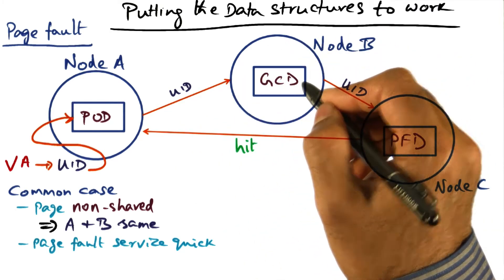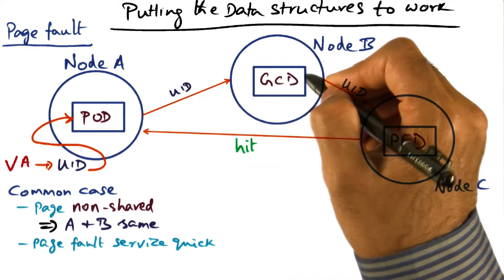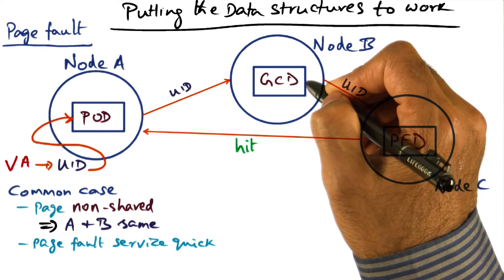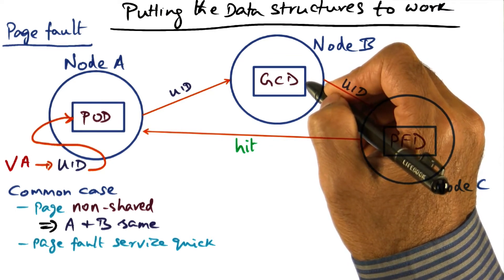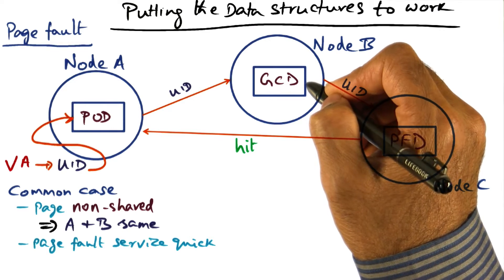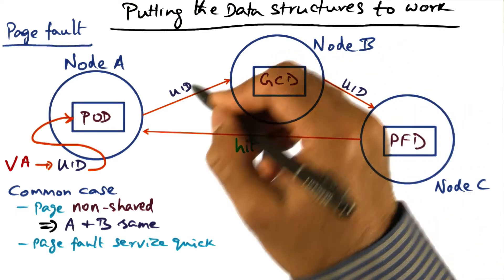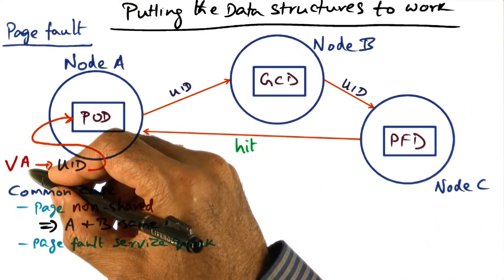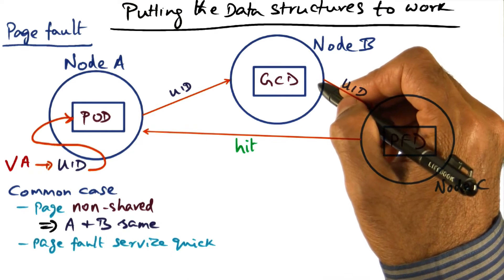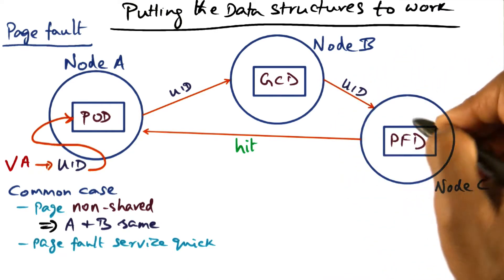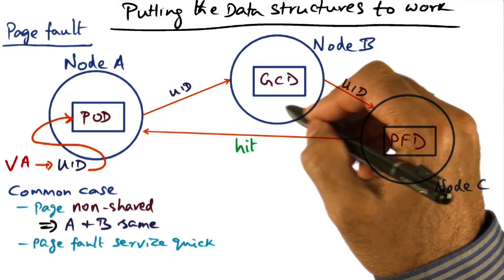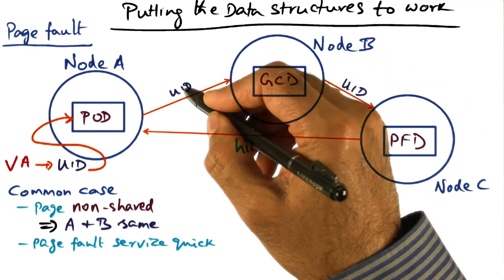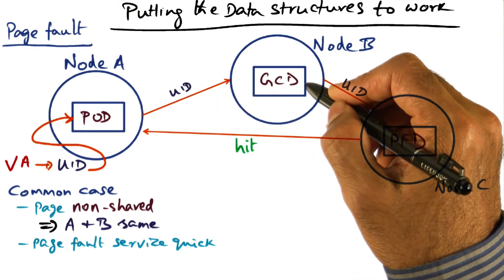Node B, because it is the owner for this UID, looks up its GCD data structure and finds that the PFD that can translate this UID — which actually represents this virtual address — is actually contained in a particular node, node C. That's the content of this data structure: given a UID, what is the node ID that contains the PFD?